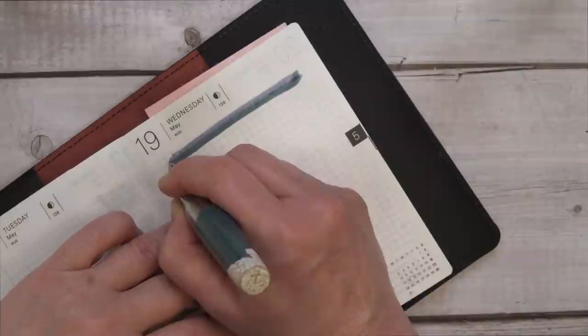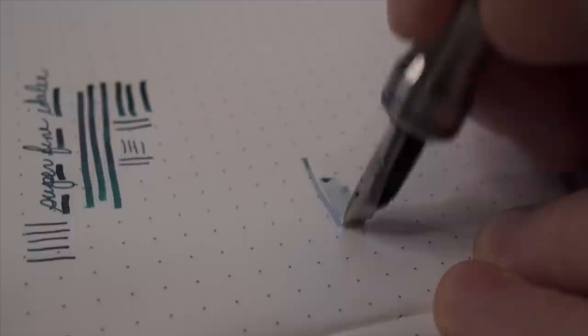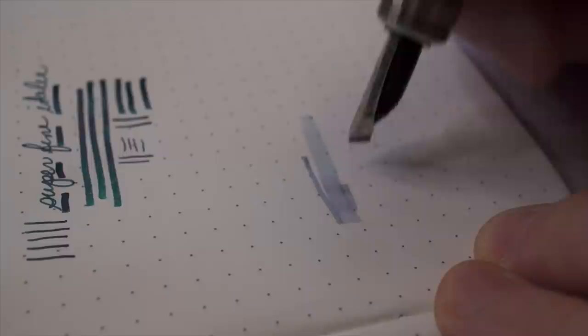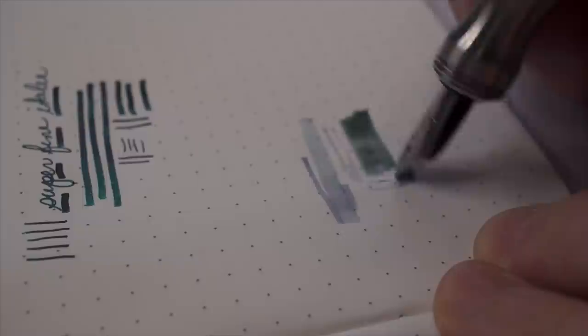You need to use the pen where the edge comes flat with the paper, and then you can lay down really loads of ink, and it works much like an architect nib, but just a really fat architect nib.